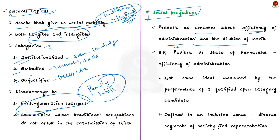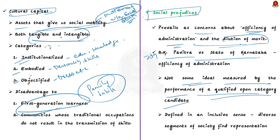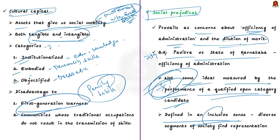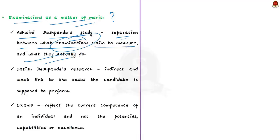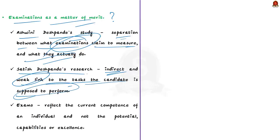Thirdly, the judgment addresses social prejudices that falsely prevail as concerns about efficiency of administration and anxieties about the dilution of merit. Quoting the 2019 decision in B.K. Pavitra vs. State of Karnataka, the court said that the benchmark for efficiency of administration is not some ideal measured by the performance of a qualified open category candidate. Efficiency of administration in the affairs of the union or a state must be defined in an inclusive sense where diverse segments of society find representation.